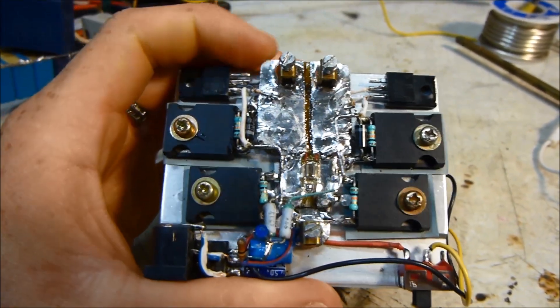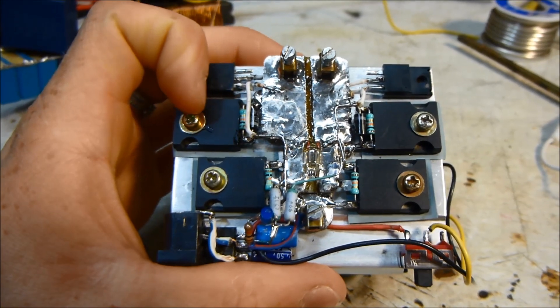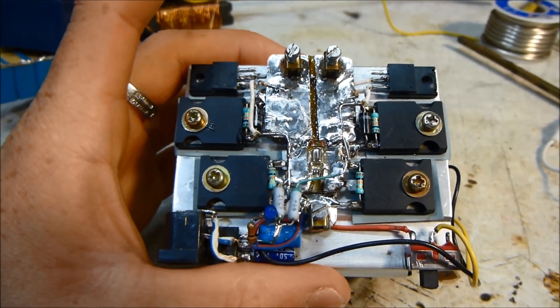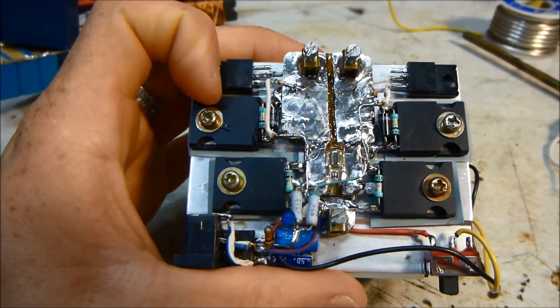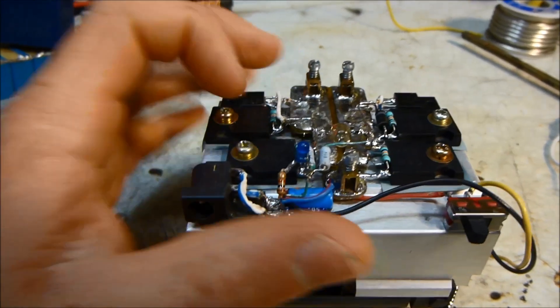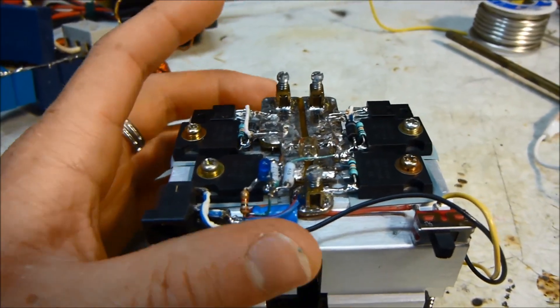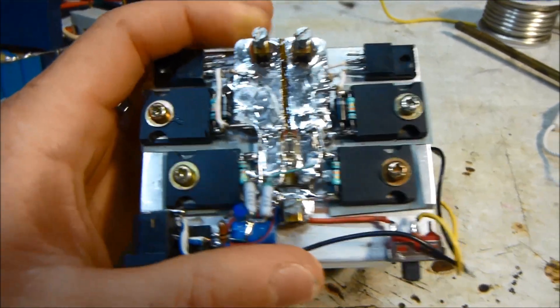It has four IRF-P260 MOSFETs, and each one can handle 50 amps, 200 volts, at least that's what it's rated for. Because I have two connected in parallel, that means this thing should, in theory, be able to handle 100 amps.